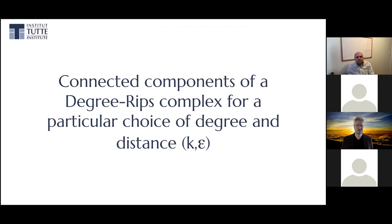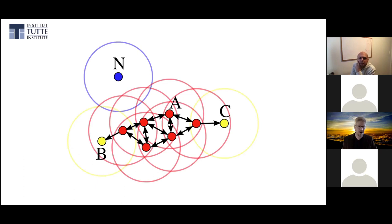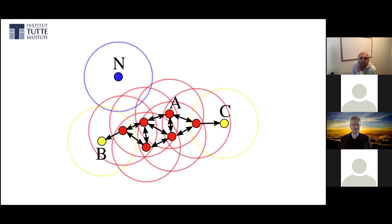Once again, topological language makes the algorithm really easy to describe. It's the connected components of a degree-Rips complex over a particular choice of degree and distance, K and epsilon. The intuition is that the number of points within an epsilon ball of any given point is a really good proxy for density. What we're trying to do implicitly is look for single linkage clustering across these dense regions of points. The red points are your degree-Rips complex because they have degree at least two with other dense points.